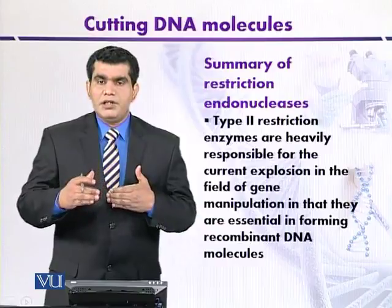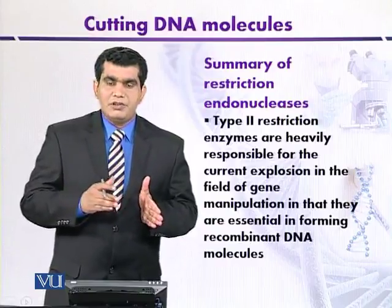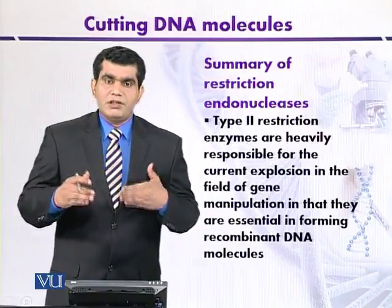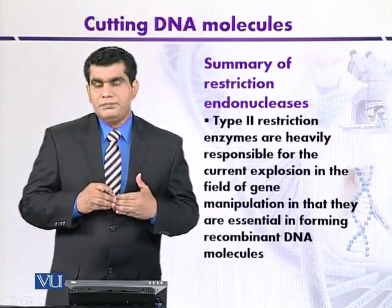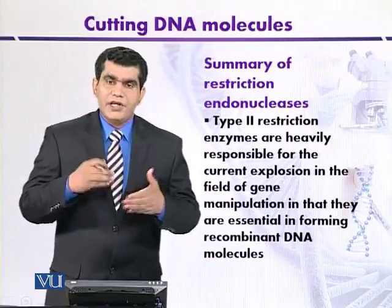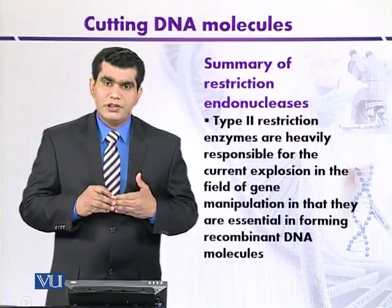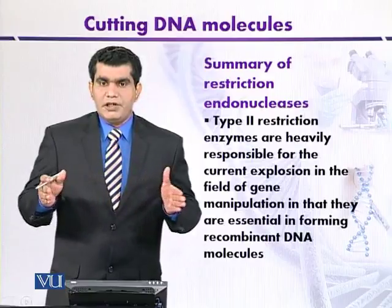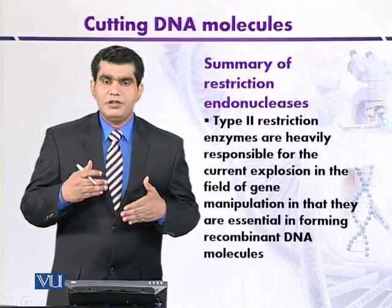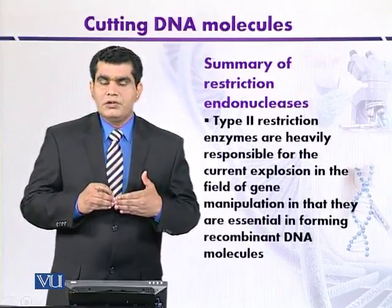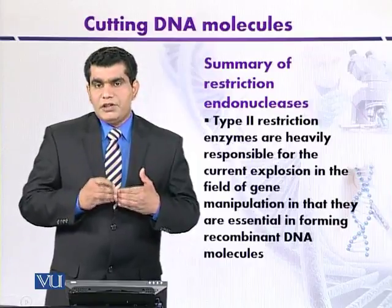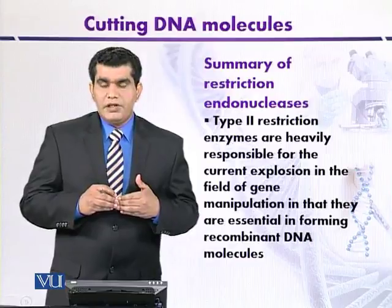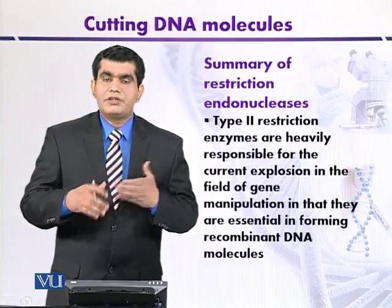If partial digestion occurs — meaning less time is given — the restriction enzyme will not get enough time to attack the source DNA, so the length of fragments produced will be greater. This is called partial digestion. Of course, the frequency of a particular recognition sequence is also very important, and restriction enzymes are very important in the process of gene manipulation.